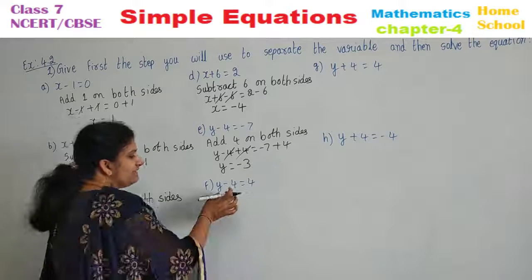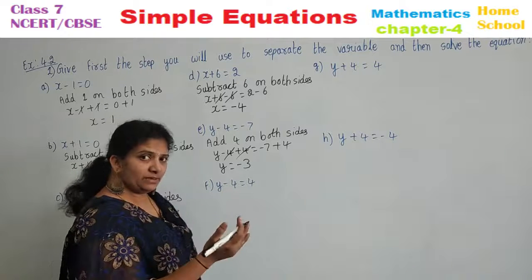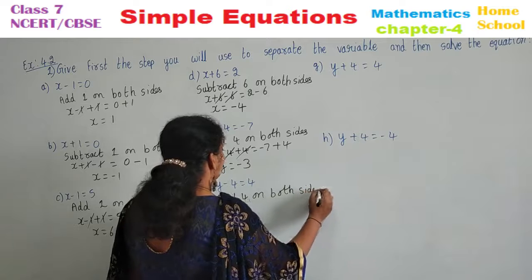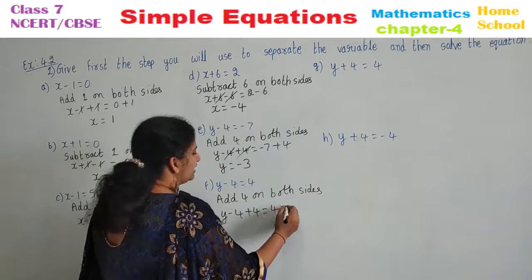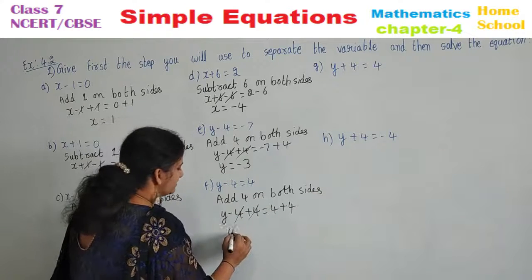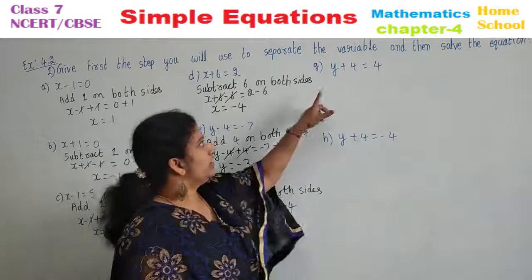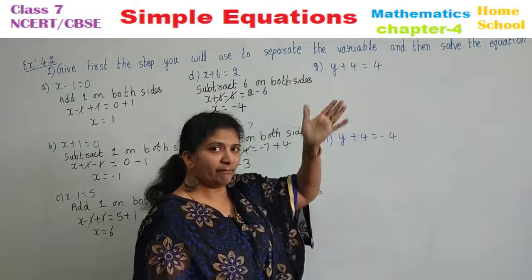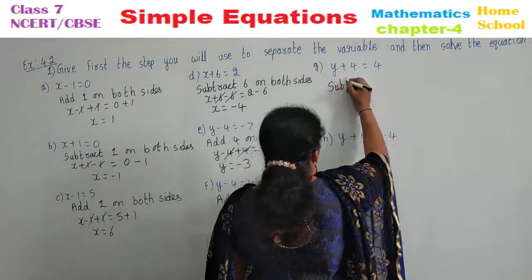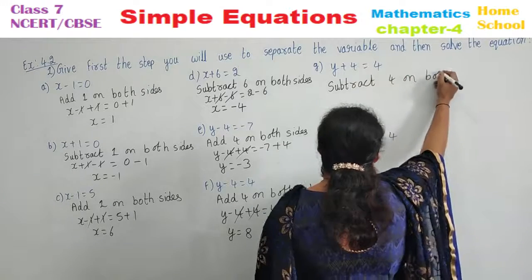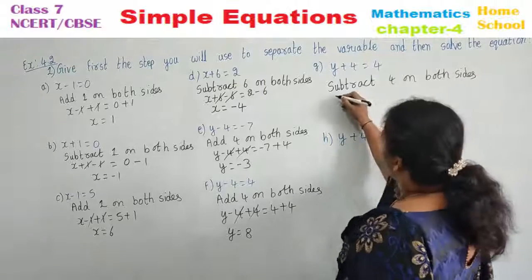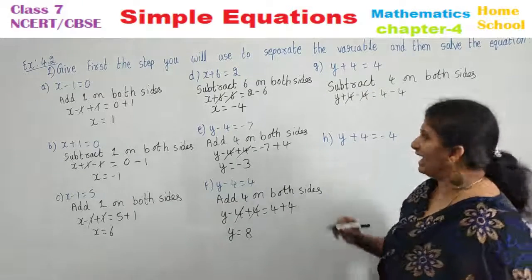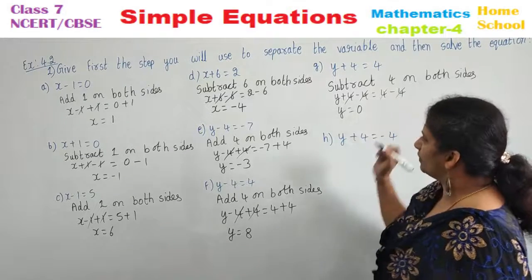Sub-question f: y minus 4 equals 4. Other than the variable, you have minus 4; its opposite is plus 4, so add 4 on both sides. y minus 4 plus 4 equals 4 plus 4; minus 4 plus 4 cancels, so y equals 8. Sub-question g: y plus 4 equals 4. You have plus 4; subtract 4 on both sides. y plus 4 minus 4 equals 4 minus 4; plus 4 minus 4 cancels, so y equals 0.